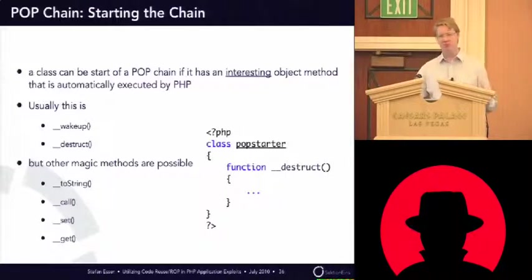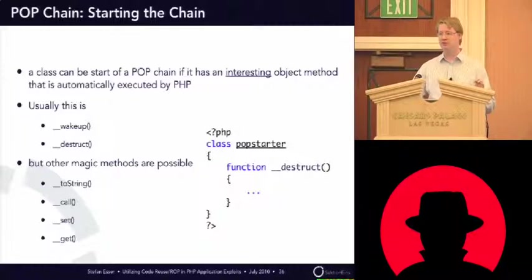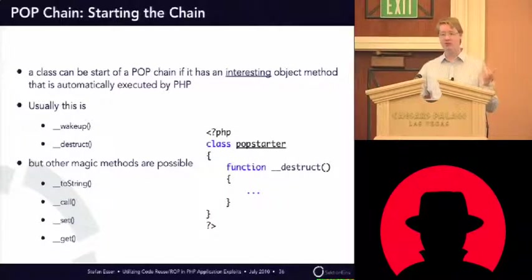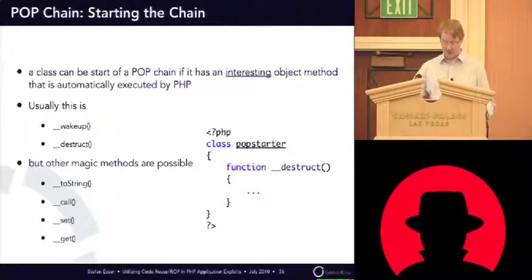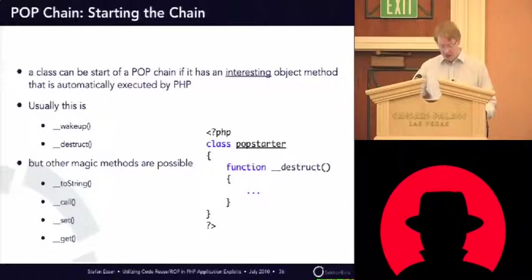But there are some other magic methods in PHP that might allow you to start a POP chain. This is toString — every time you have an object and it gets concatenated to a string, it will call toString. So maybe you'll find a usable toString method. When a method is called on an object and the method is not known, it will try to find the __call magic method; if it exists, it will execute that. And get and set are for magic properties — getter and setter. In real world, so far I've only started POP chains with wakeup and destruct. The others are theoretically possible, but so far I haven't found an application vulnerable to those.